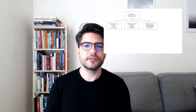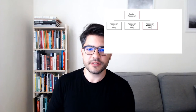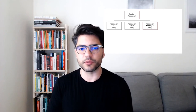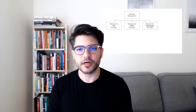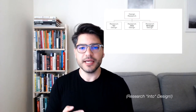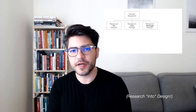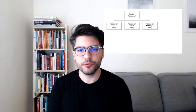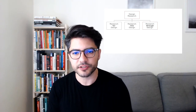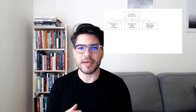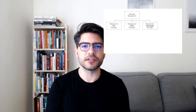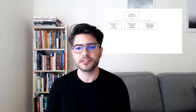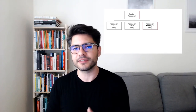Frayling talks about three different kinds of design research. First, research for design — this is what designers do when gathering information to guide actual design decisions on a product or app. Second, research in design, which is when design itself and designers become a subject of research. Finally, research through design — later called constructive design research — involves creating designs, making things, and using these things as tools for knowledge creation, finding out knowledge that would be impossible to know otherwise.